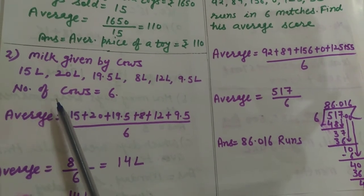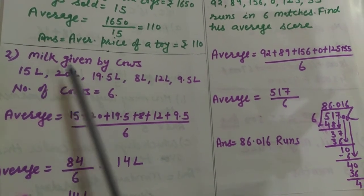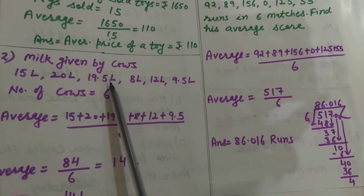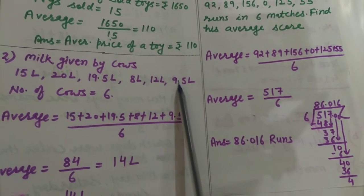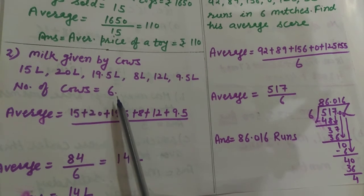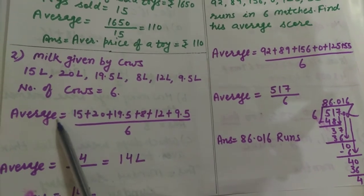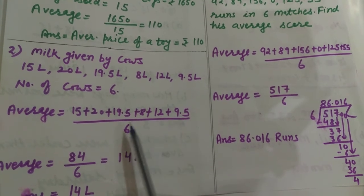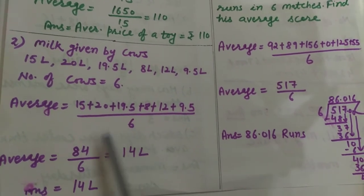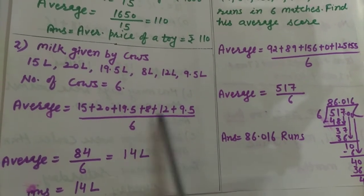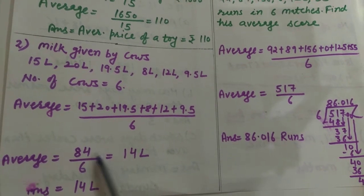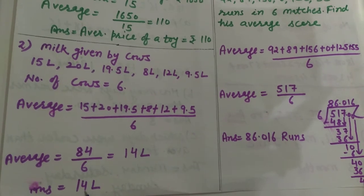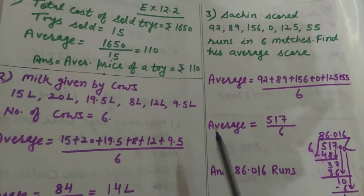After that question number 2. There is milk given by 6 cows: 15 liter, 20 liter, 19.5 liter and so on. Number of cows are 6. So average will be, pehle kya karenge? Saari cows ke milk ko plus kar denge, divide by 6 number of cows. Sabko plus karne pe aapka aayega 84. Divide by 6. Answer will be 14 liters.